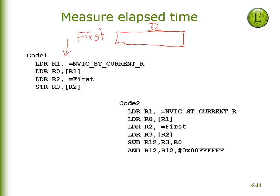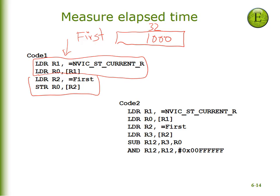When I read the current value right here, that will give me a 24-bit number which will specify the current time. Let's just pick a number — we'll make it a thousand. It's going to store that number into 'first'. So there will be a thousand, which will represent the time in 12.5 nanosecond units at which this code executed. You can see it's only four instructions long.